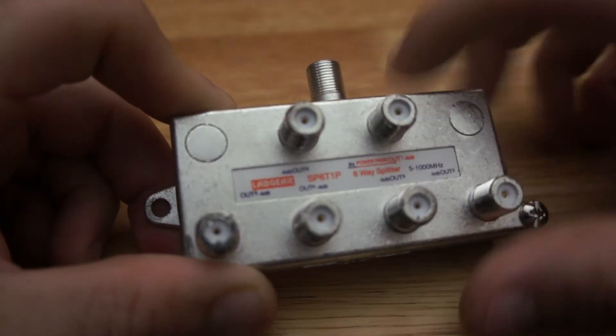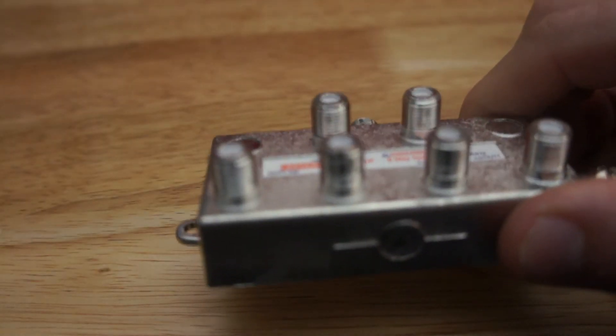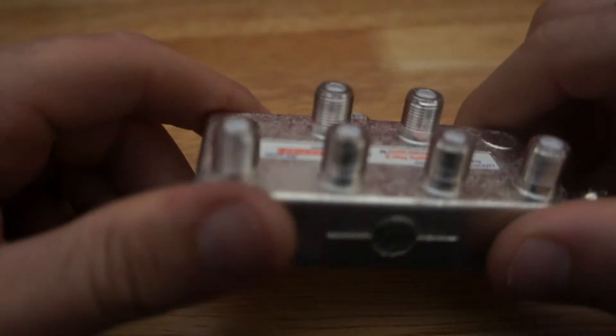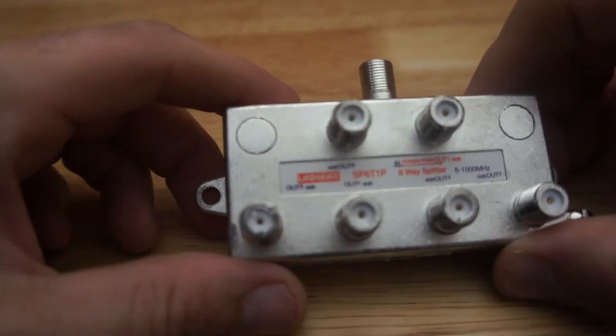Any splitter will have an output that's called the power pass. That's only if you have a booster or a masthead amplifier in the mix. What else do you need to know?